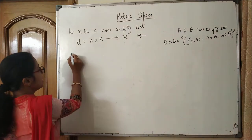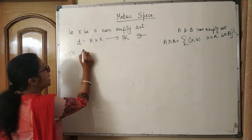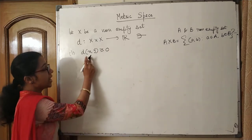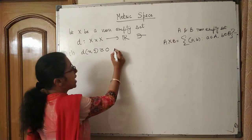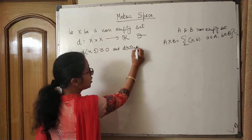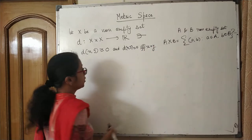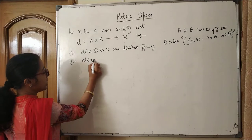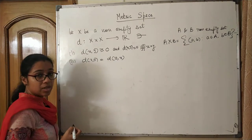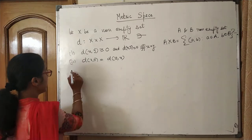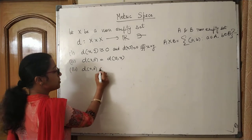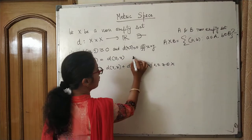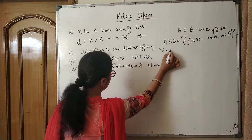We have a map from X cross X to the set of real numbers such that it satisfies three properties. First property: D(x, y) is always greater than or equal to 0, and D(x, y) = 0 if and only if x = y. Second property: D(x, y) is always equal to D(y, x). Third property: D(x, y) ≤ D(x, z) + D(z, y) for all x, y, z in X.